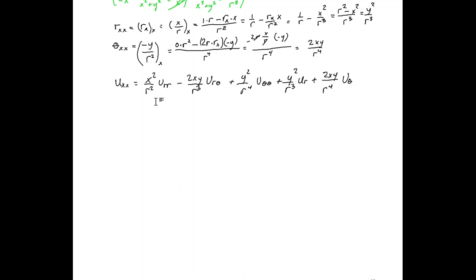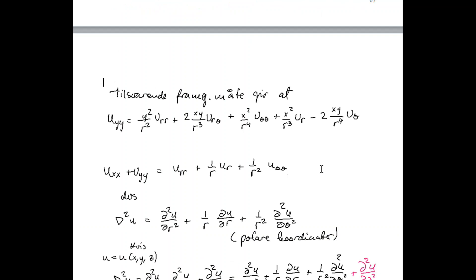When we have these two expressions for u_xx and u_yy, we simply add them to get the Laplacian, and we get this expression. In other words, the Laplacian of u — that is, the nabla squared operator — is given by the second partial derivative of u with respect to r, plus 1 over r multiplied with the derivative of u with respect to r, plus 1 over r squared multiplied with the second derivative of u with respect to theta. This is the Laplace operator in polar coordinates.